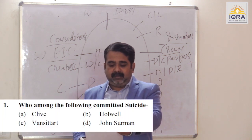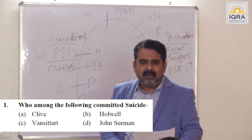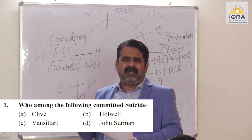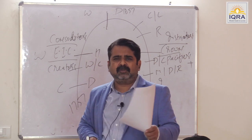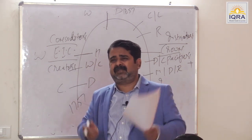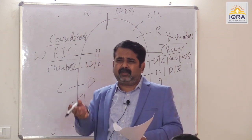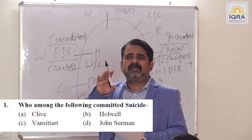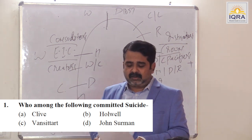Question: Who among the following committed suicide? Answer A — Robert Clive. He died in a mysterious condition; no one is clear how he died. He was facing corruption charges in England, but that was not the definitive reason. He suffered from a mysterious illness and possibly took the wrong drug or knowingly took a drug. Answer is A.